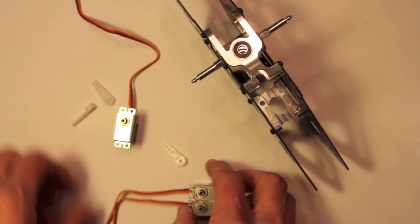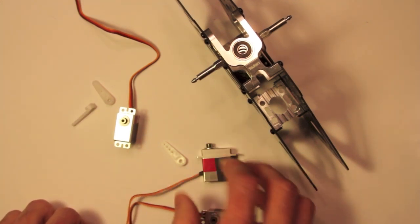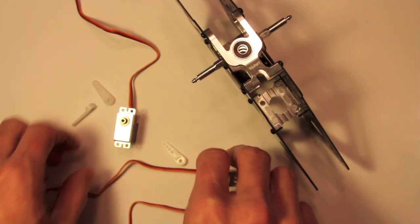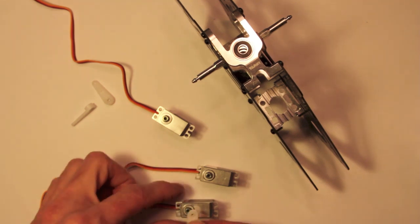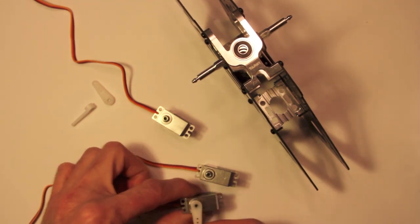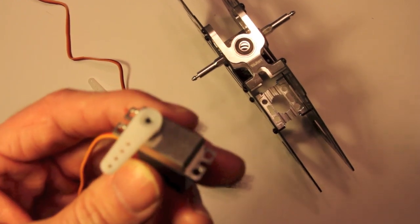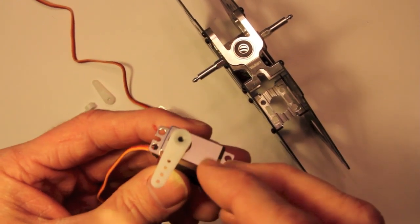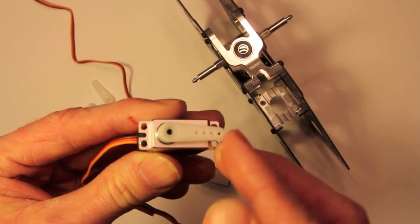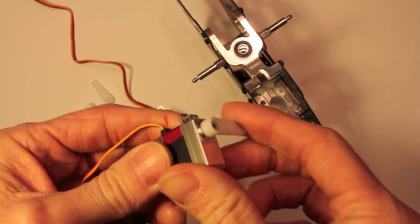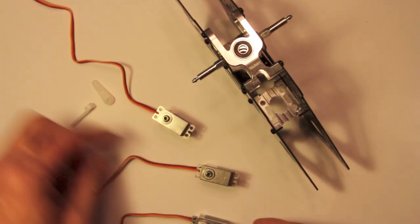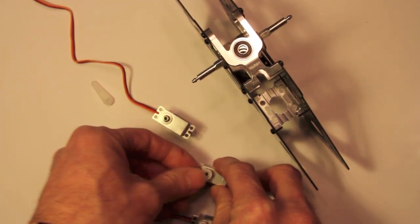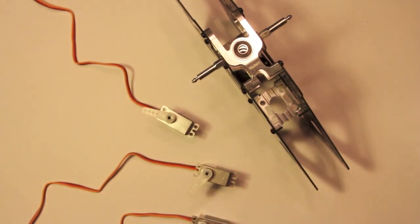What we want to do first is get these things centered and we do that by giving them power. Because right now, if you put a servo arm on this and turn it, it will go wherever you tell it to go. We need to apply power so that it will go to center. I'm going to randomly put some of these on here just so we can see that happen.